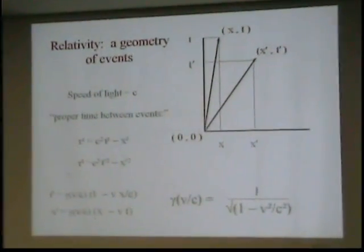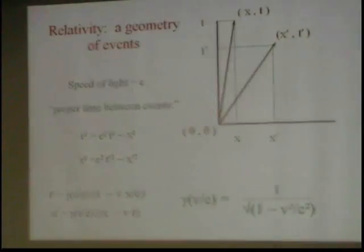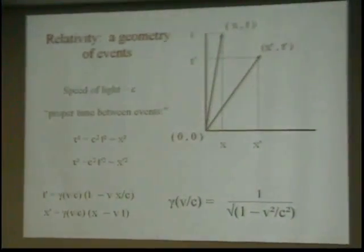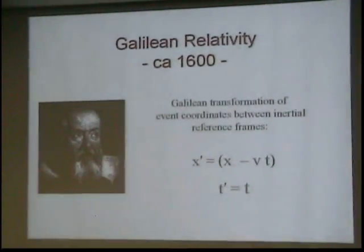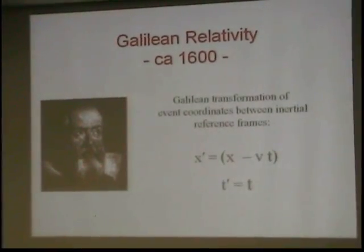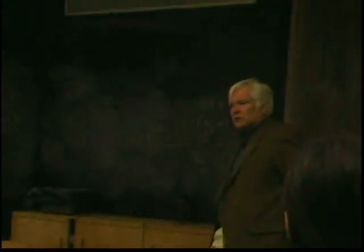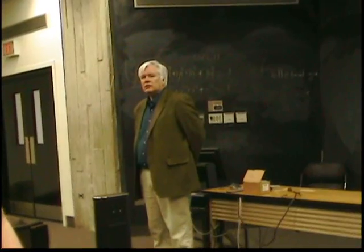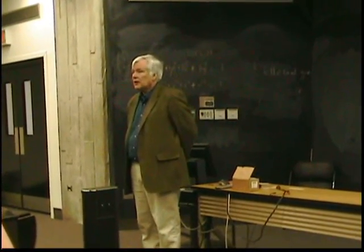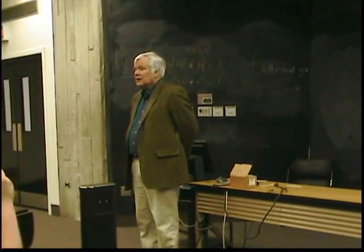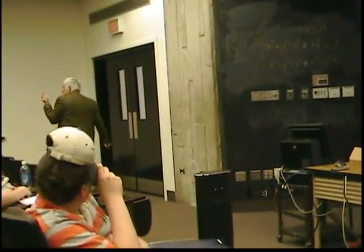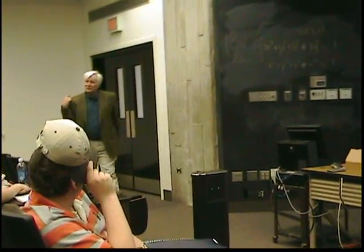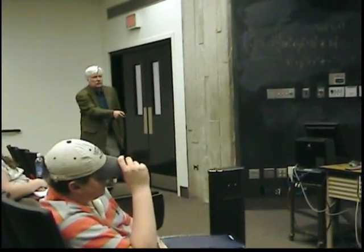Now Einstein was faced with something else. He began to think about time. One of the things that Galileo's rule predicts is that if he shoots a photon at velocity c in that direction, and I start running after that photon at velocity v, I should see it moving slower — at velocity c minus v. If I run at the velocity of light, I should have caught up with the photon. And if I go faster than the speed of light, I should see the photon moving behind me. That's a direct prediction of Galileo's rule.